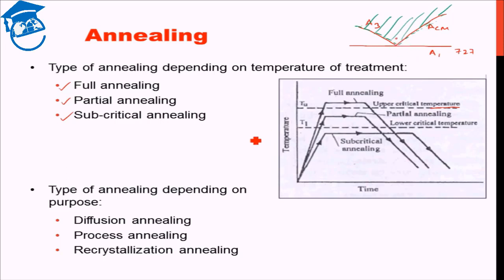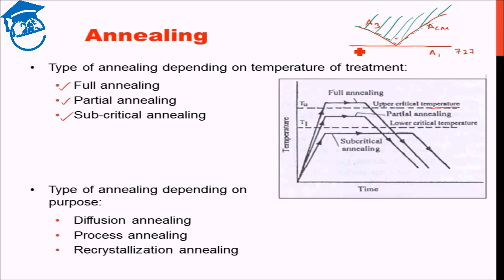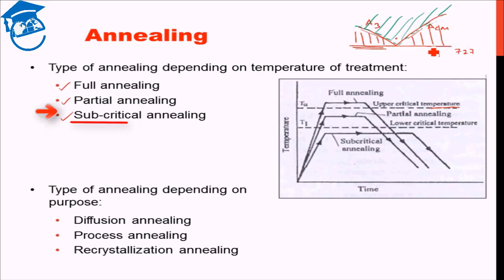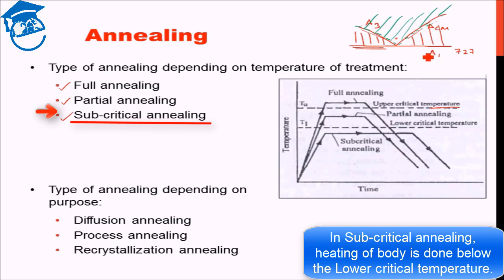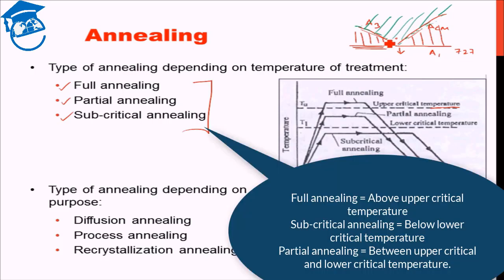In the case of partial annealing, we take the body into the two-phase region — between the lower critical temperature (the A1 line) and the upper critical temperature (the A3/ACM line). Subcritical annealing is when we heat the body and hold it below the lower critical temperature, that is below A1 at 727°C. So these three processes cover all temperature ranges: full annealing above the upper critical, subcritical annealing below the lower critical, and partial annealing between the upper and lower critical temperatures.